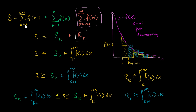In the last video, we saw that if we had an infinite series where each term is a function of n, and the function itself is a continuous, positive, decreasing function over the intervals that we care about, and we assume that this series converges, we can estimate that value it converges to using a finite number of terms and some integrals. We establish these integrals by splitting the sum into a finite sum and another infinite series, and we can conceptualize that infinite series as either an underestimate or an overestimate of an integral.